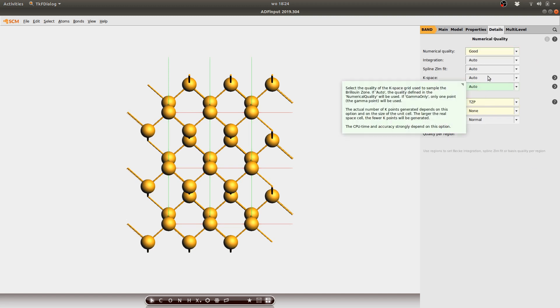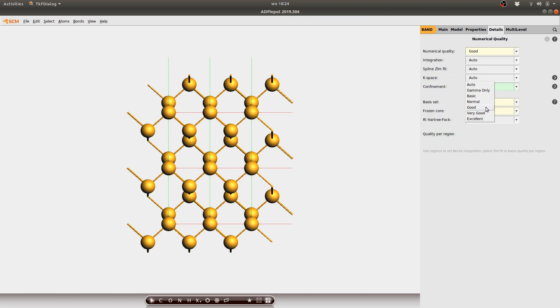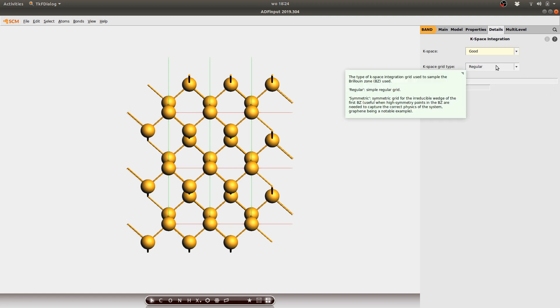However, we have to put a few more details in here namely the k-space. We have to increase this a little bit. We will pick good as an option here. Furthermore, we want this k-space grid to be symmetric which makes a lot of sense since we're dealing with a very symmetric system.